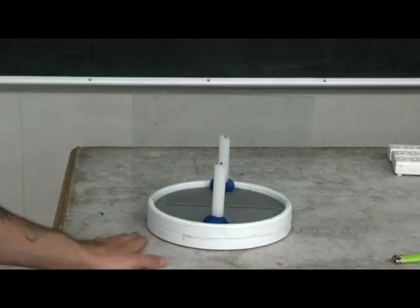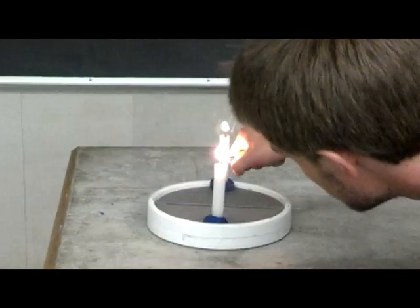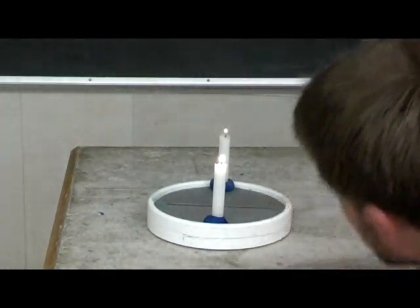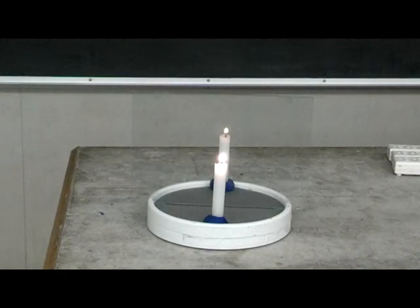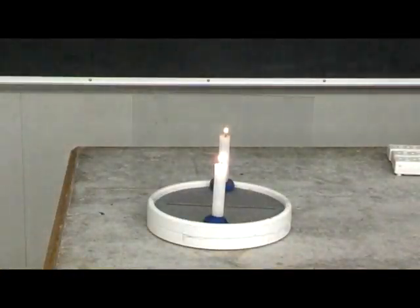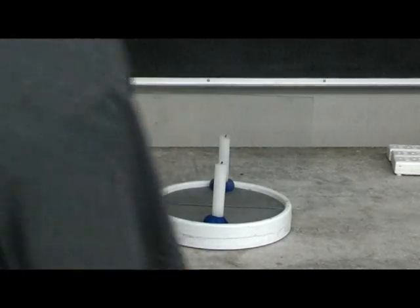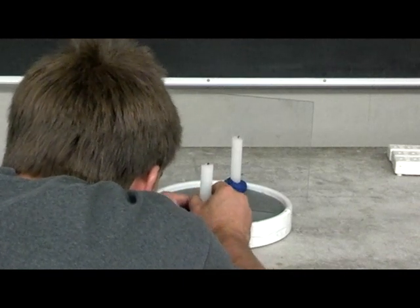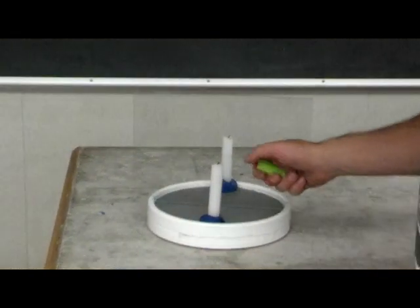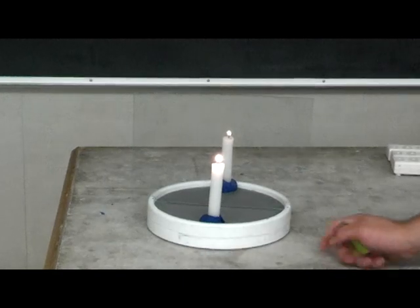So you need to get these candles perfectly lined up so that when you light one, the reflection makes it look like the flame is on the other one, and you can't see the reflection of the other candle. But I don't have them lined up well enough yet, so let's try just like that. Alright, so I think that looks pretty good.